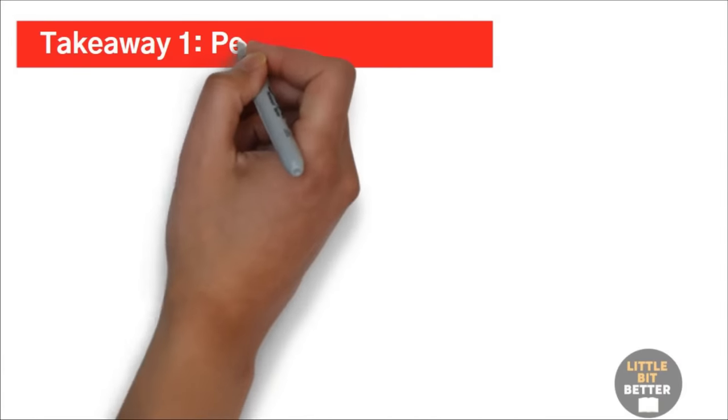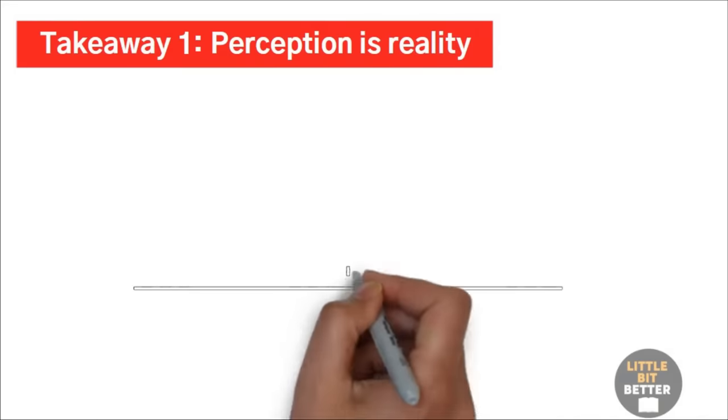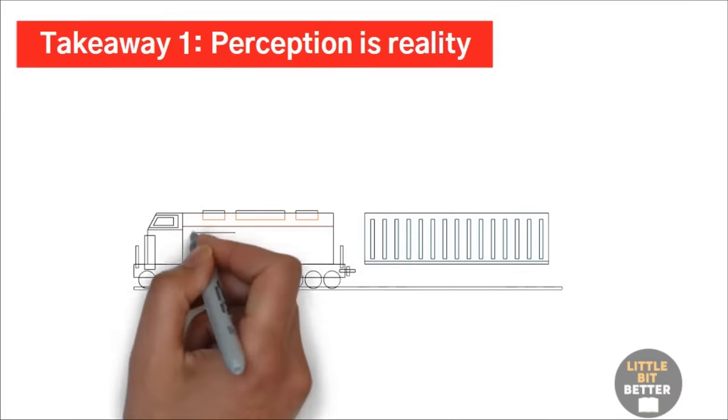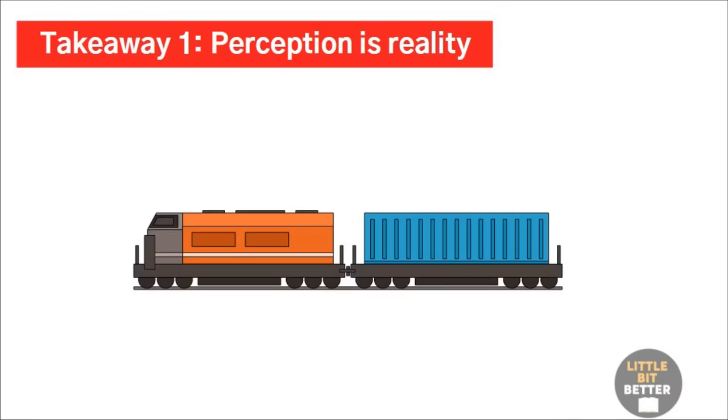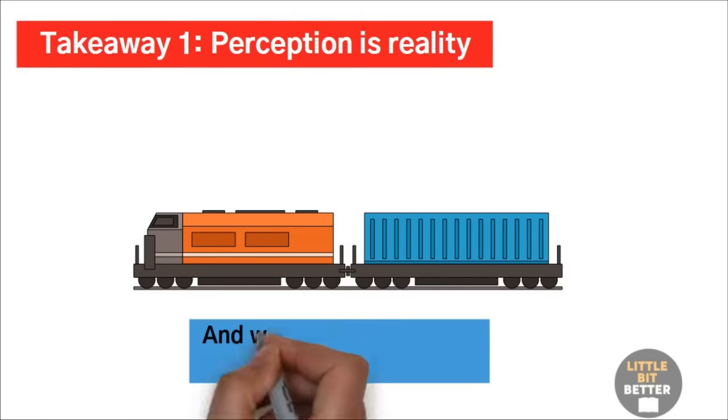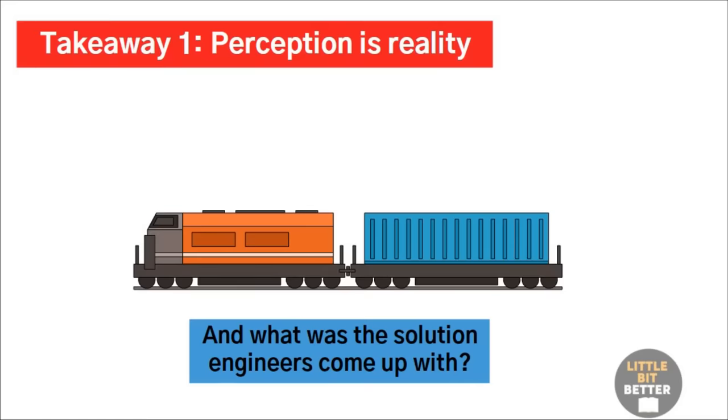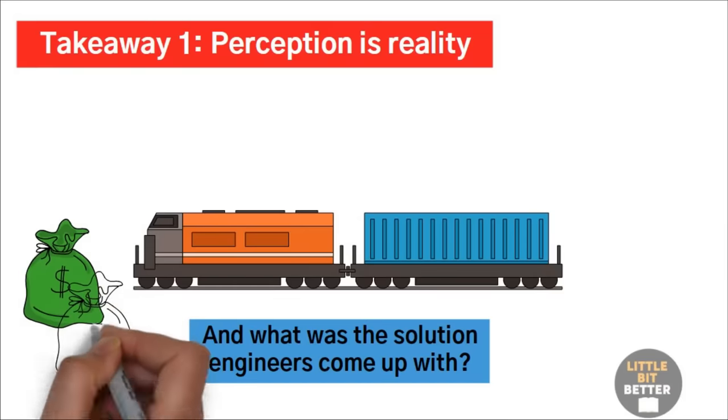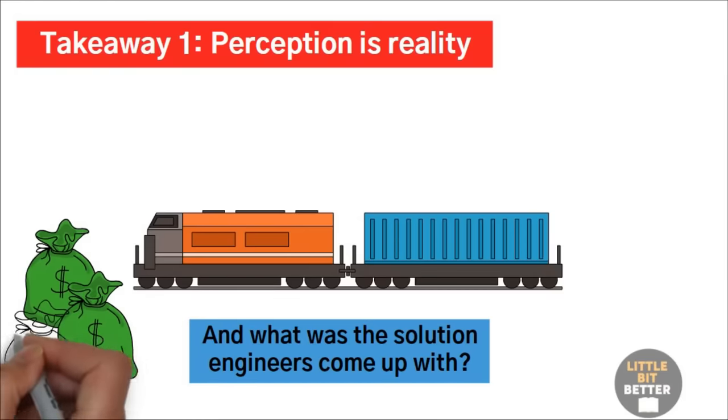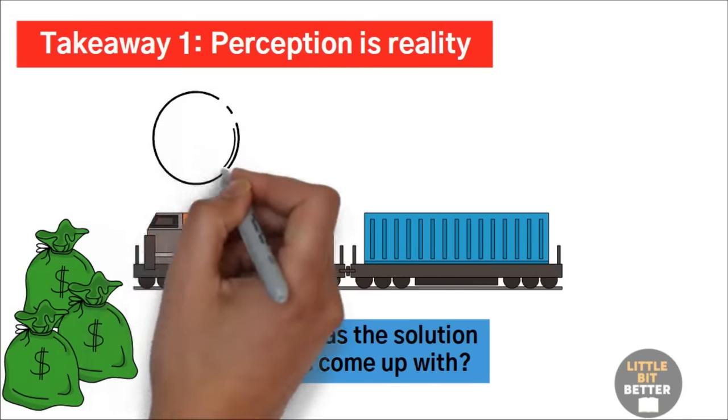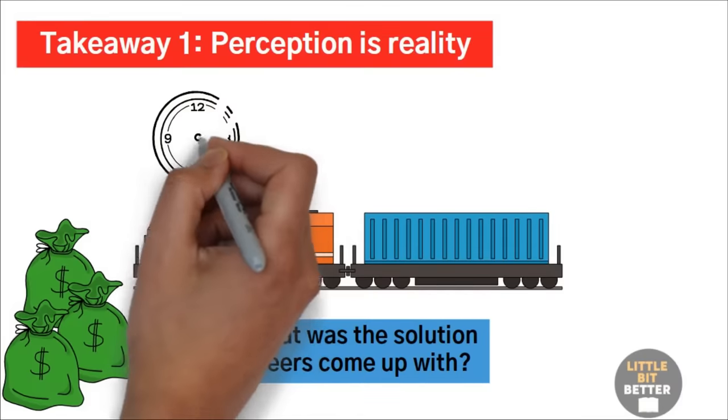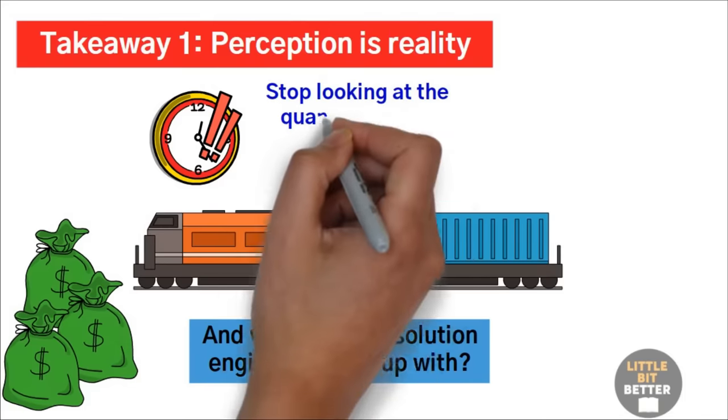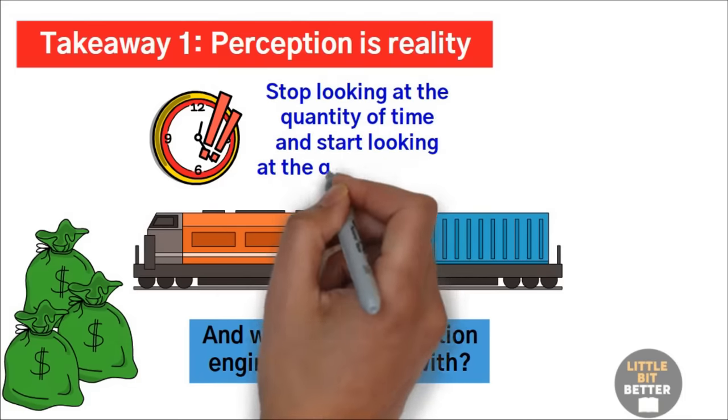Takeaway number one: Perception is reality. In 2009, Eurostar, a train company, was losing customers to airlines. So they asked, how do we make the journey from London to Paris better? And what was the solution engineers came up with? Well, they spent over $8 billion and built completely new train tracks, which reduced the total travel time by 40 minutes, from 3 hours 20 minutes to 2 hours 40 minutes.